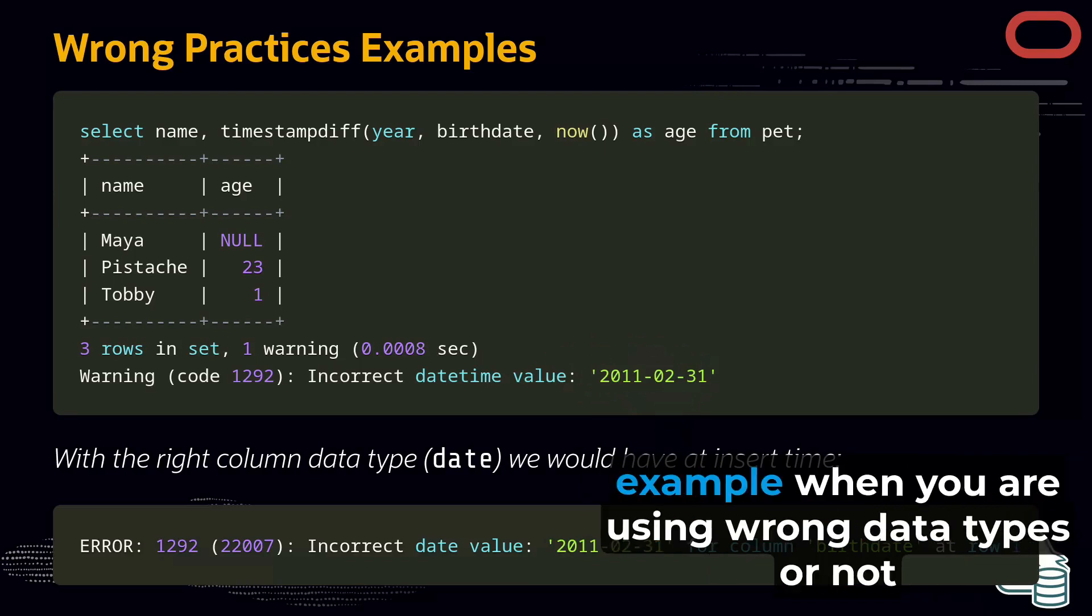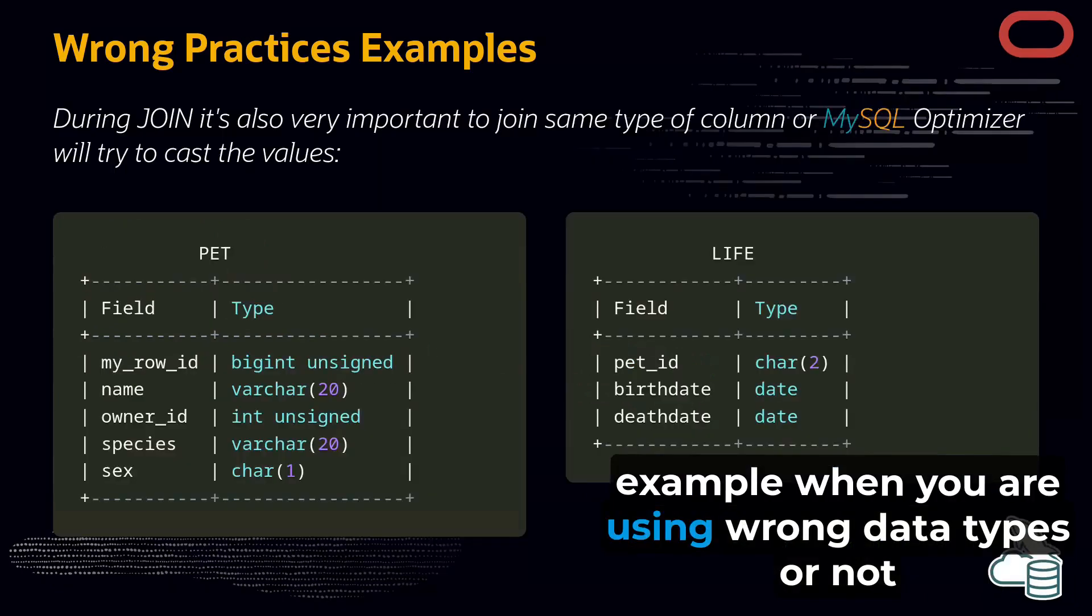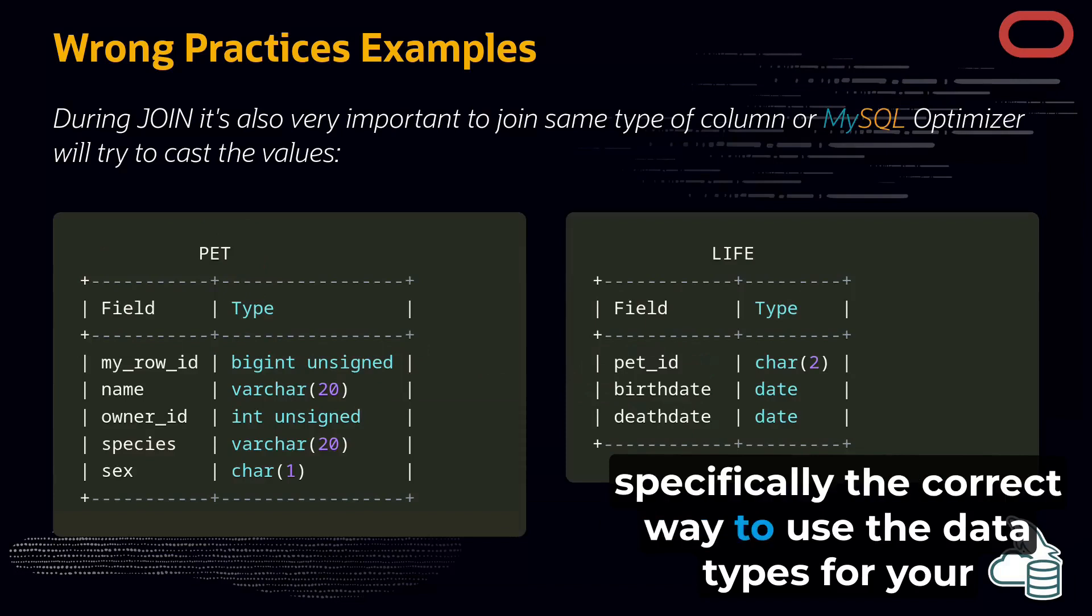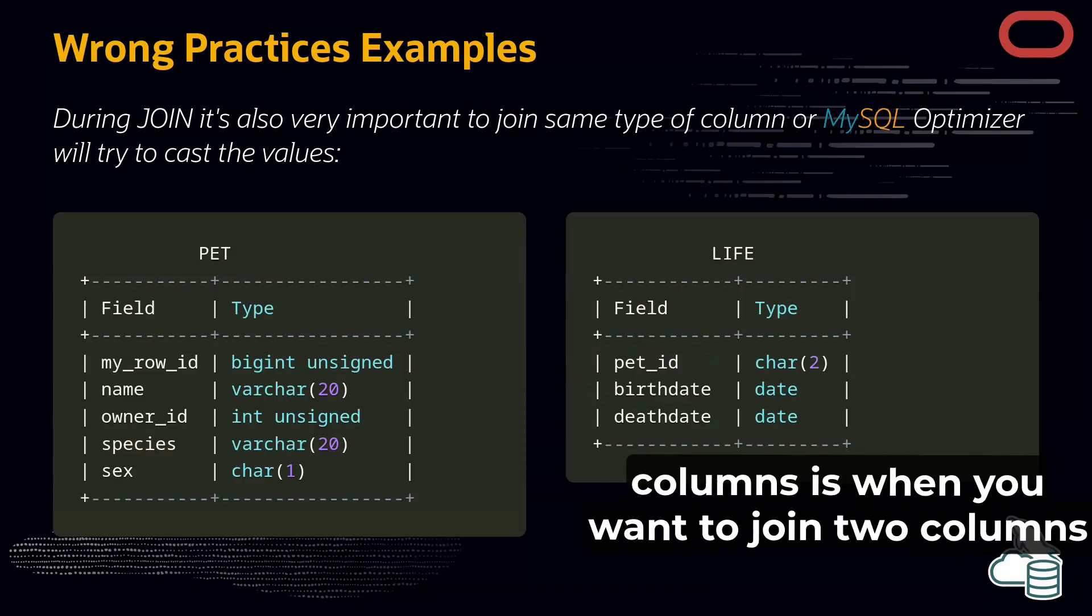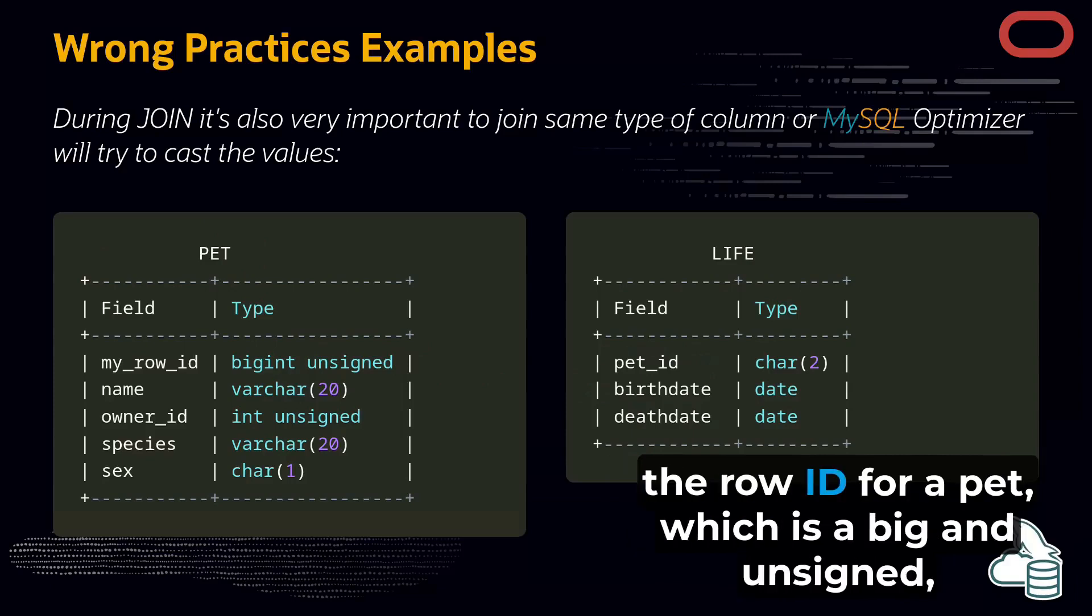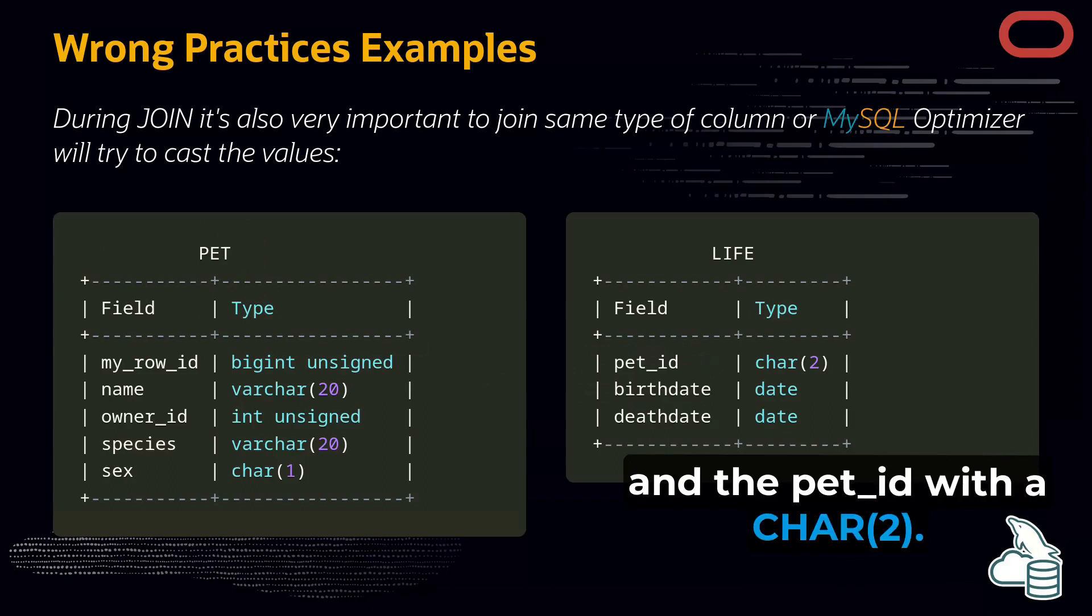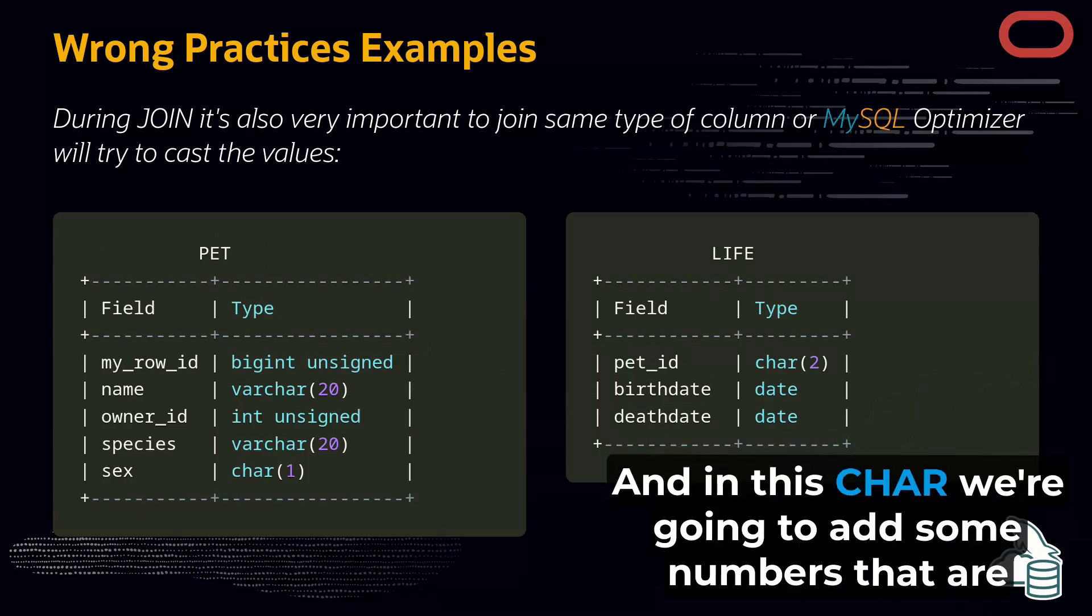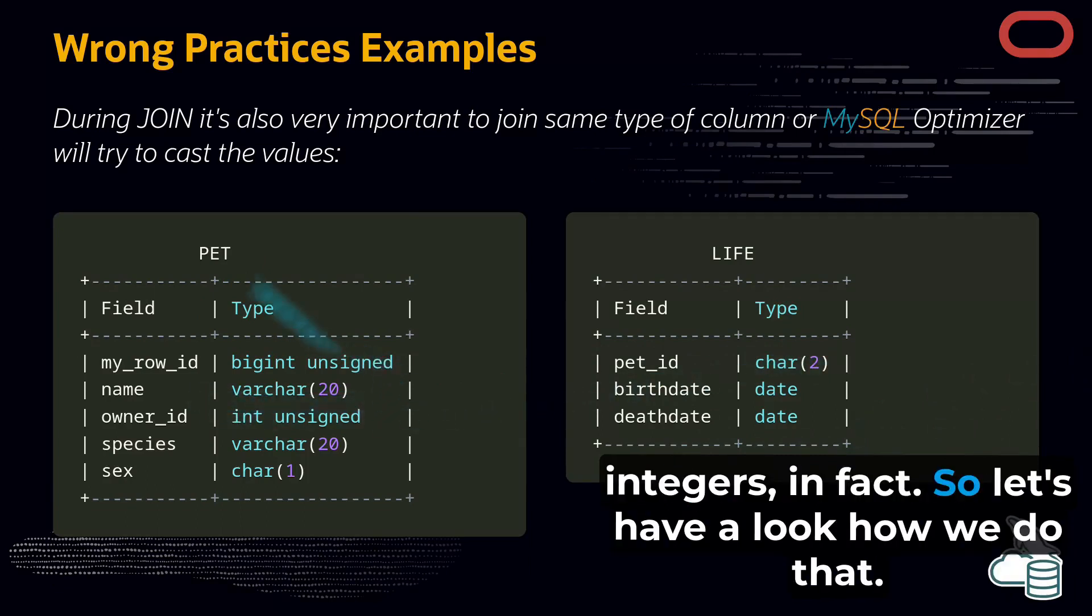Another bad example when you're using wrong data types is when you want to join two columns with different data types. In this case, we're going to join the table pet and the table life using the row ID for a pet, which is a big unsigned, and the pet ID with a char 2. And in this char 2, we're going to add some numbers that are integers.